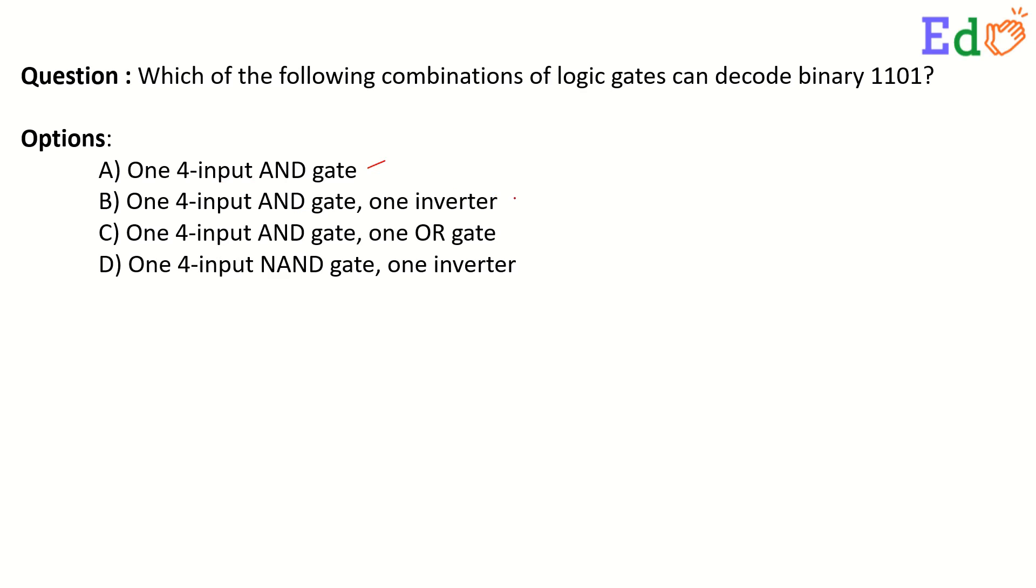B: one 4-input AND gate with one inverter, C: one 4-input AND gate with one OR gate, and D: one 4-input NAND gate with one inverter.